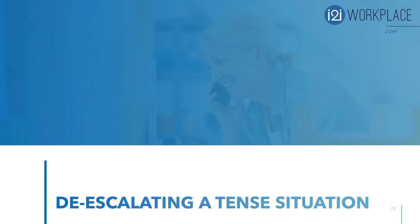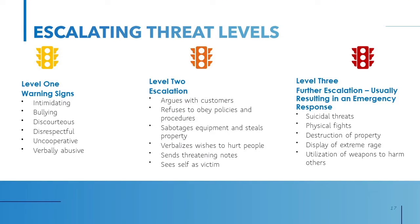Now let's talk about de-escalating a tense situation that has gone beyond our abilities to resolve conflict. The key is understanding the warning signs. Some signs at level one might be behavior that is intimidating, bullying, discourteous, or rude — disrespectful, especially if they make comments about race, religion, or national origin. Or if a person is uncooperative and becoming verbally abusive. Those are warning signs that the situation could get out of hand if you're not careful.